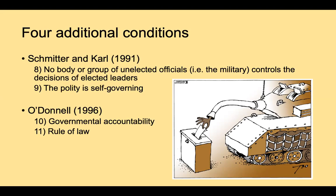We might think about the profound influence of the United States in Nicaragua in the early 1910s and 1920s, where the U.S. marched troops on Nicaraguan soil for 30 years to promote U.S. interests, democracy be damned. In 1996, Guillermo O'Donnell, also a student of Latin American politics, added two more dimensions: government accountability and the rule of law.